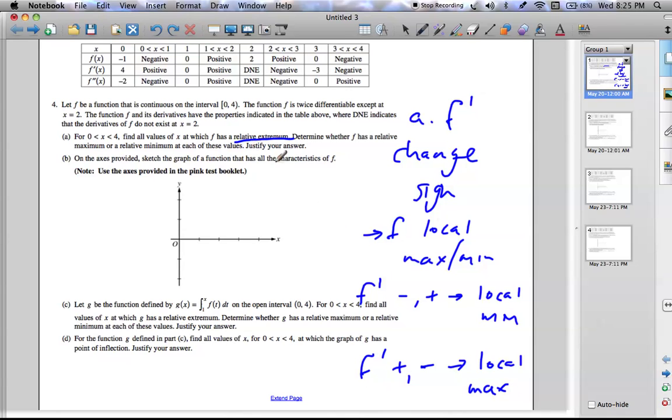So we can find when f' changes sign. Here it has a 0 but does not change sign. It goes from positive to 0 to positive. So we don't want that.